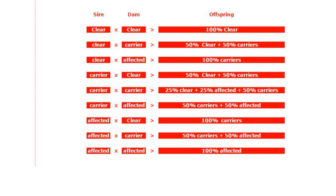For an autosomal recessive trait — meaning it's not on the sex chromosomes — if both parents are clear (little n, little n), all offspring are clear. If the dam is affected (CL, CL) and the sire is clear, all offspring are carriers but none has the disease. The carrier genotype is CL, little n, and clear is little n, little n.